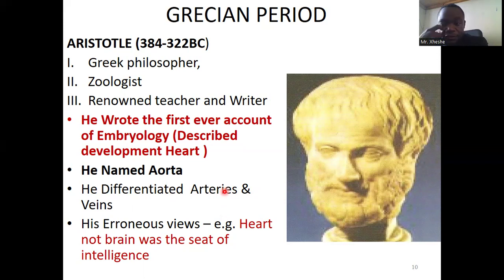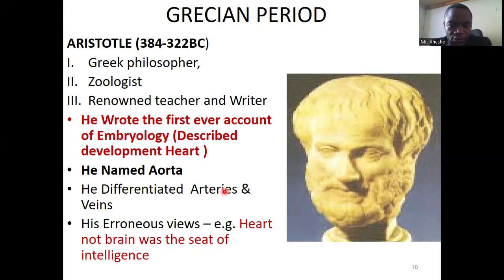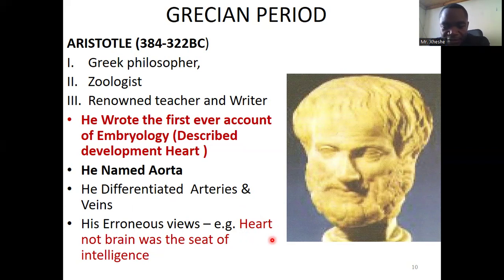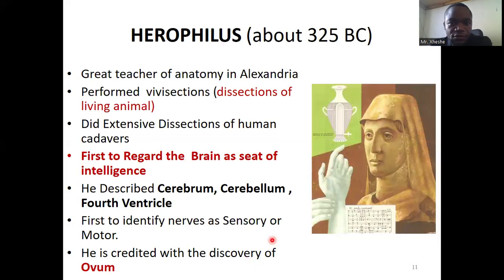Aristotle was the first person to name the aorta — the largest artery in the body — a term still used today. However, since no dissections were done and only external observations were made, he thought that intelligence is located in the heart and not the brain. He reasoned this because at some point you can feel the heart — when scared it beats fast — not knowing that the brain controls all body activity.